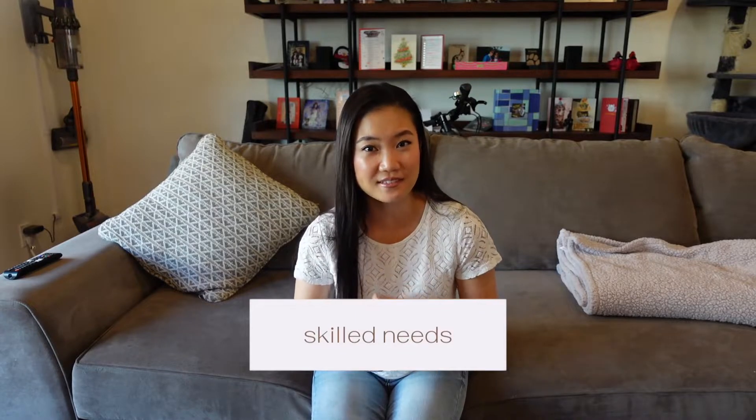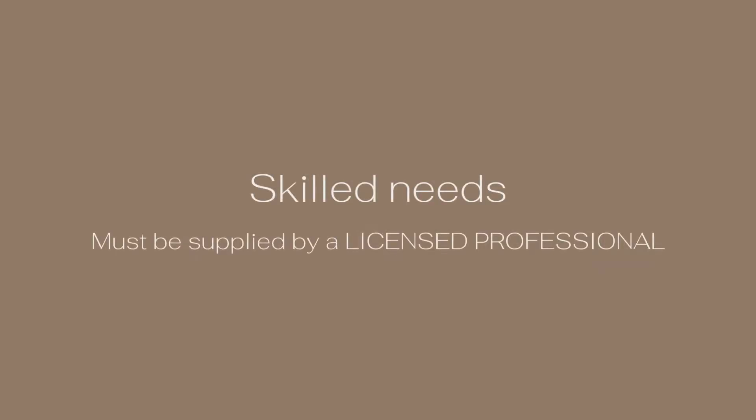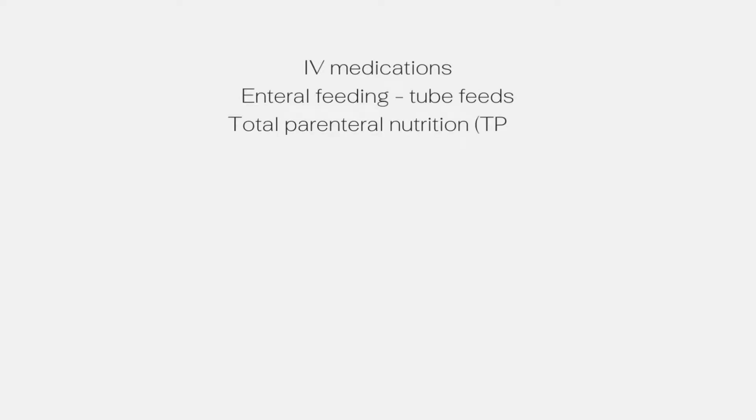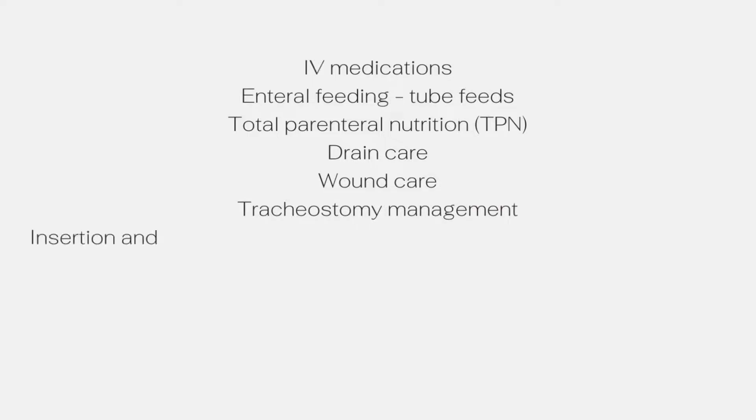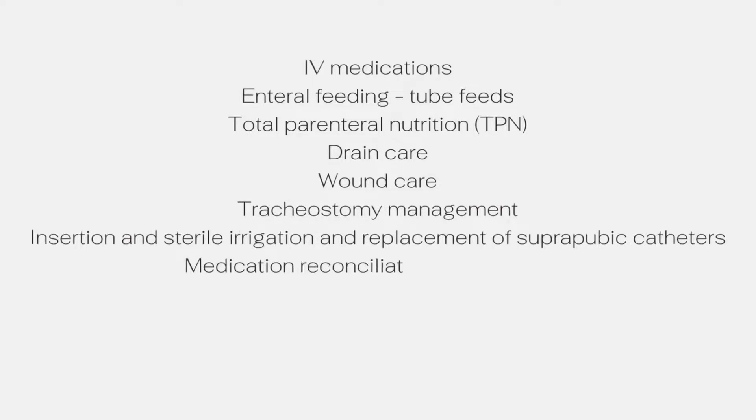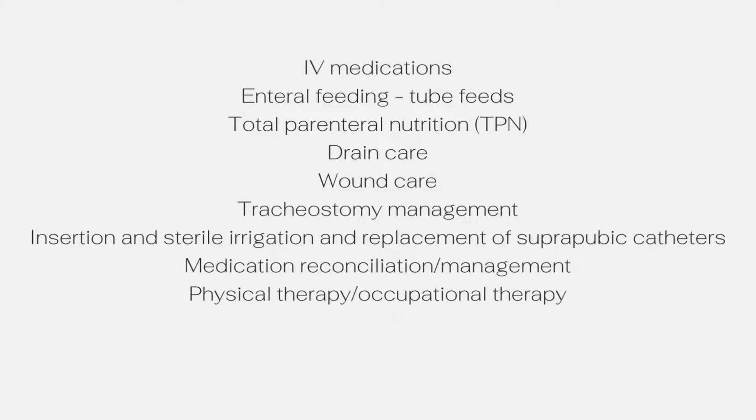Let's start with skilled needs. Skilled needs are needs that a patient has that can only be supplied by a licensed professional, such as a nurse, physical therapist, or occupational therapist. A list of possible skilled needs includes IV medications, tube feeds, TPN, drain care, wound care, tracheostomy management, insertion and changing of catheters such as a suprapubic catheter, medication reconciliation or management, and physical and occupational therapy. If your patient has a skilled need, at the bare minimum they'll need to go home with a home health agency, or if it's too much to handle at home, they'll need to go to a facility such as an acute rehab unit or a skilled nursing facility.